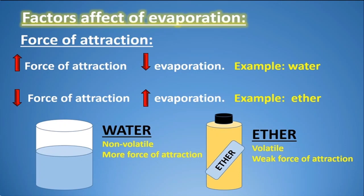Evaporation is a spontaneous process, so the water level in a glass gradually decreases but the glass is not emptied quickly. However, if you put petrol in an open container, even 10–20 mL would evaporate quickly. Petrol contains gasoline, which is mainly octane — an alkane. Alkanes only have London dispersion forces, which are weak, so the rate of evaporation of petrol is much higher than water.